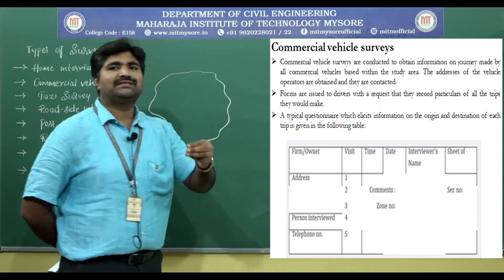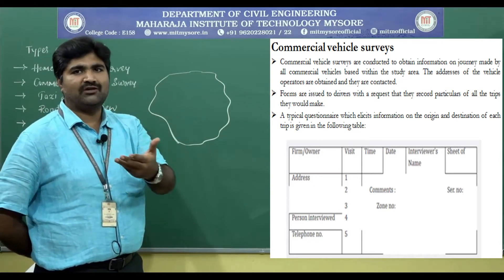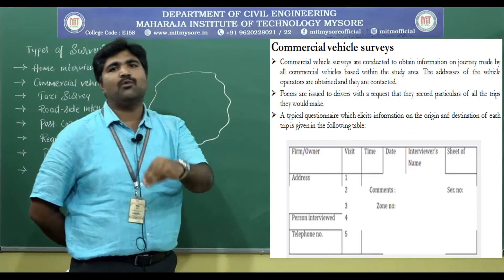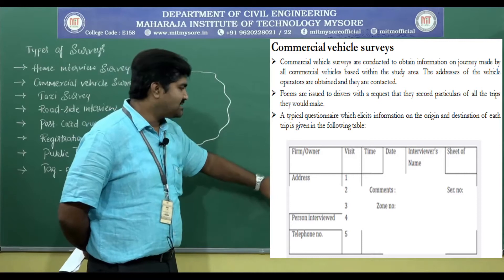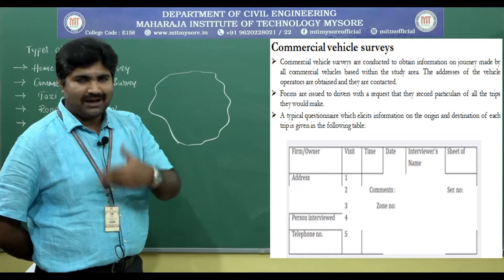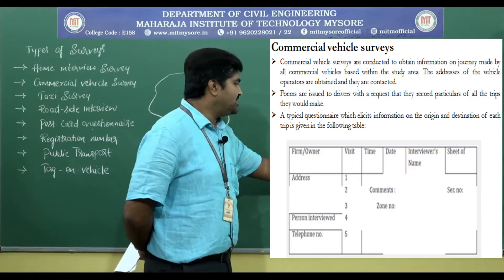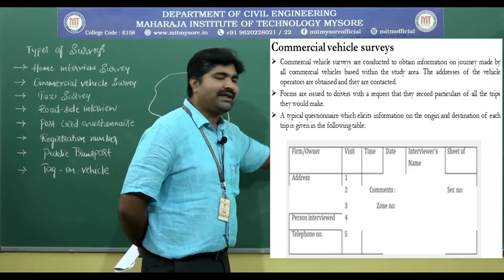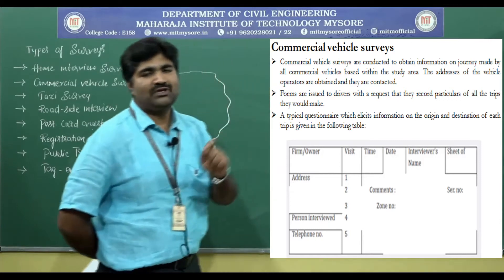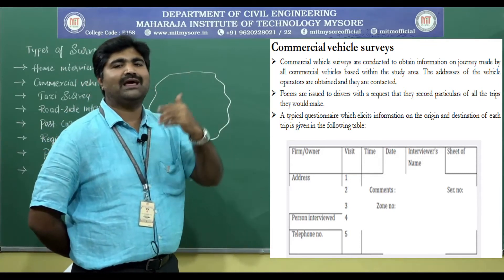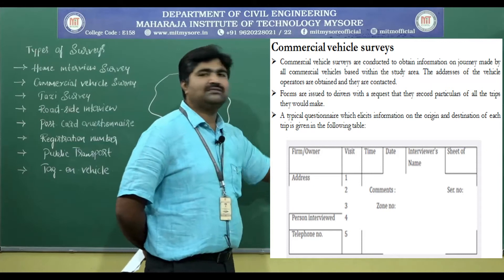This is a typical questionnaire format for the commercial vehicle survey. It shows: firm or owner name — the company or owner name should be entered here, since a firm may have more than one vehicle. Next, address of the firm or company. Next, person interviewed — whether it is owner, manager, or driver. Then telephone number, visit number (whether first or second visit), time of interview, date, and the enumerator's name — who is conducting the survey — should also be entered so they can be contacted if any clarification is required in future. Any comments should also be entered.